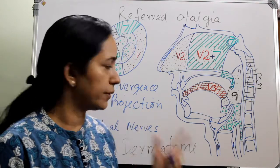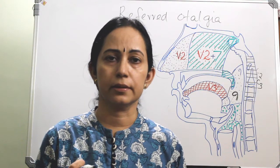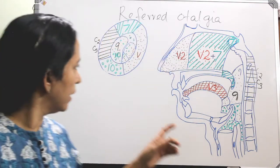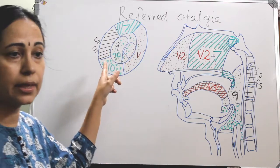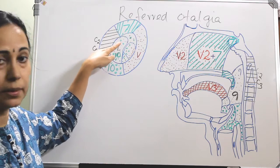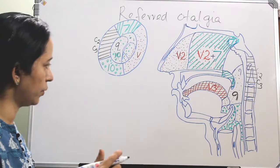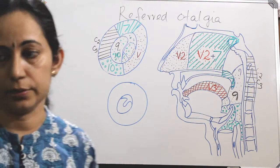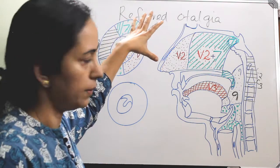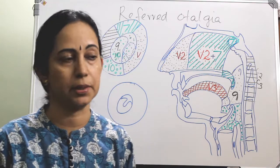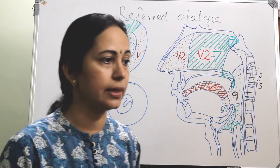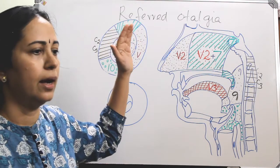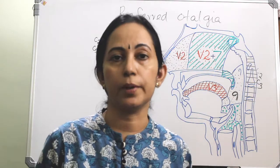The important part of referred otalgia is the nerves involved. For that we have to know the innervation of the ear. This is the right ear and the right tympanic membrane, with the external auditory canal surrounding it. The anterior part is supplied by the auriculotemporal nerve, which is a branch of the trigeminal nerve — mainly the tragus, crus of helix, and the anterior wall of the external auditory canal.